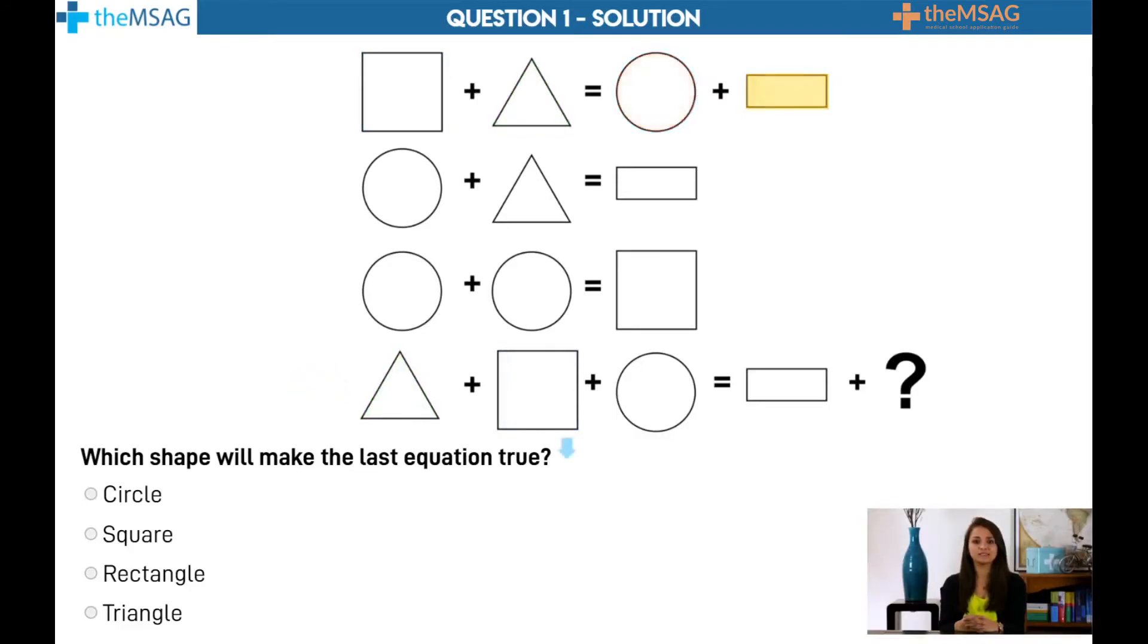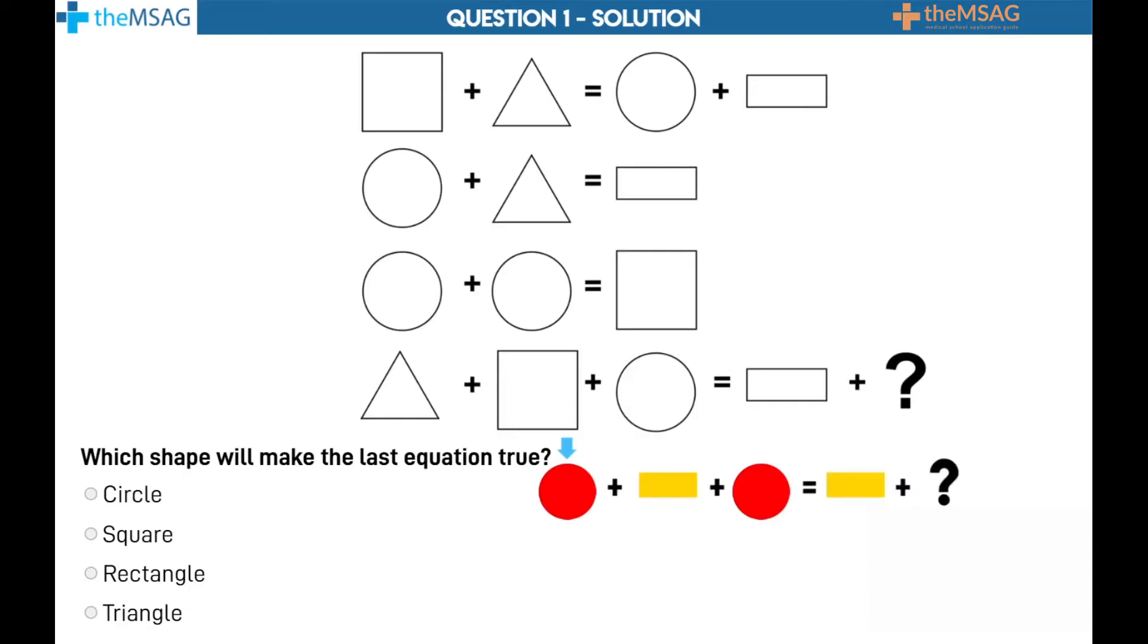Using substitution, this equates to circle plus rectangle plus circle equals rectangle plus question mark. Write now to eliminate the question mark.